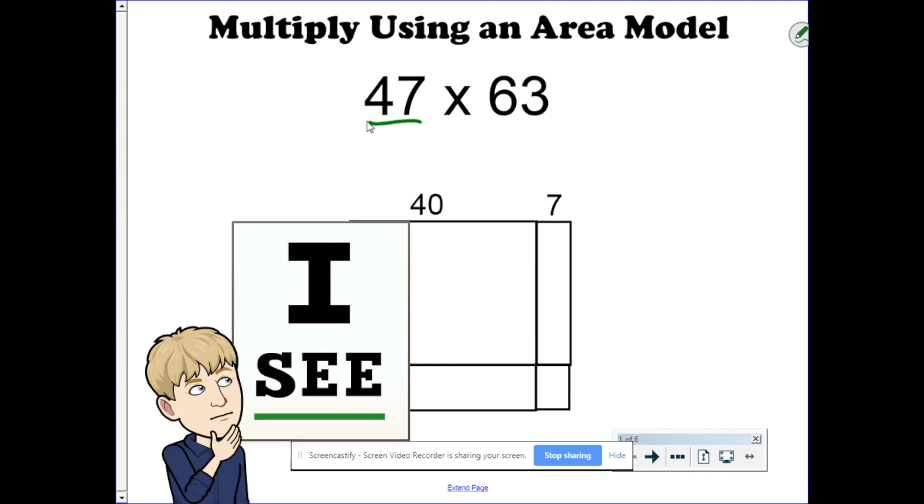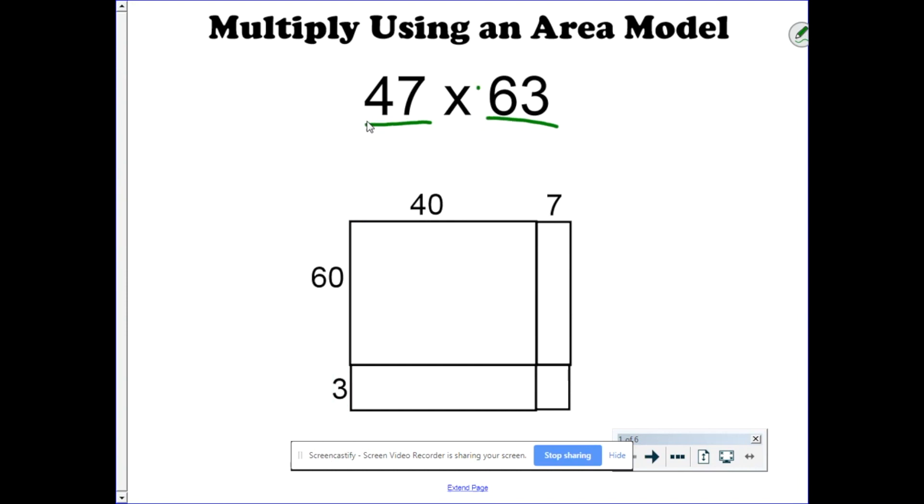As you can see, I have 47 times 63. What an area model does is it breaks those numbers apart by place value. The 47 gets broken down to 40 and 7. The 63 becomes 60 and 3.